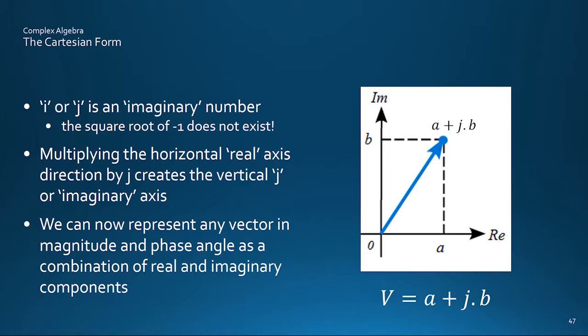We can now simply call the vertical axis the J or imaginary or IM, direction, and the term like 4J simply means the vector four units long pointing vertically upwards. And now we have this imaginary axis, we can represent any vector as a combination of RE real and IM imaginary components, with J indicating the imaginary direction.